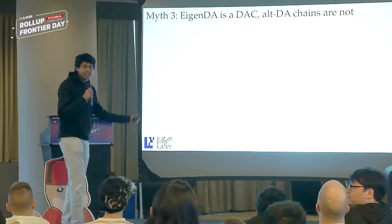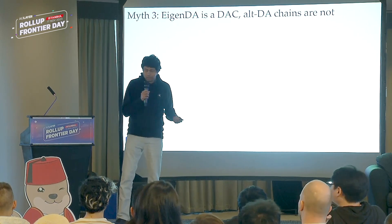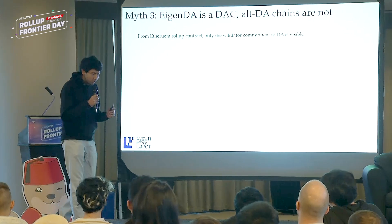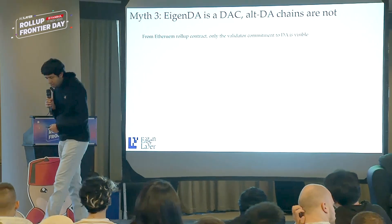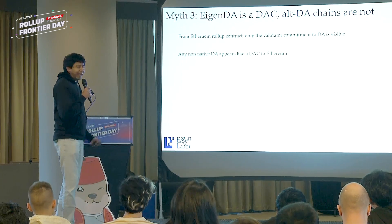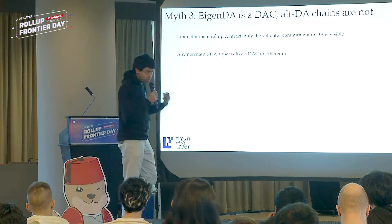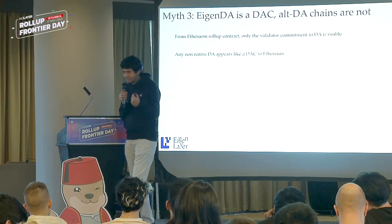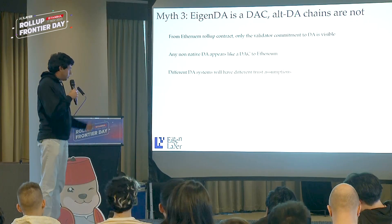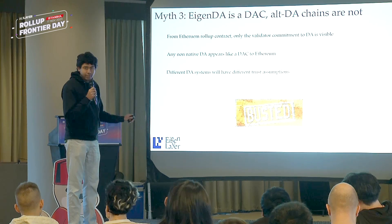Myth three: EigenDA is a DAC, and other DAs are not DACs. A DAC is a data availability committee — the image of a multi-sig or a small number of nodes just signing something. From the Ethereum viewpoint, the only thing Ethereum rollup contracts can see is whether a majority of validators have signed off on the data. Any non-native data availability solution appears like a data availability committee to Ethereum — you're just getting a signature of a group of nodes. These nodes may be staked, rotating, or have economic consequences, but from Ethereum's viewpoint, everything is a data availability committee. Different DA systems will have different trust assumptions on these DACs.